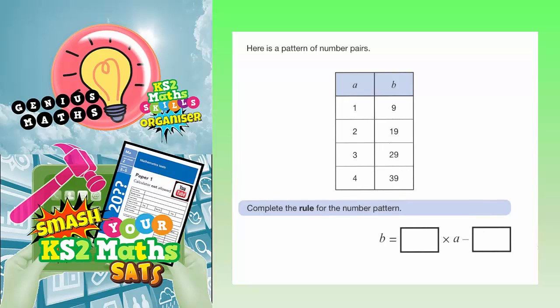Question 23. Here is a pattern of number pairs. We've got As and we've got Bs. We need to find a rule. So the rule is basically saying to get B, what do you do to A?